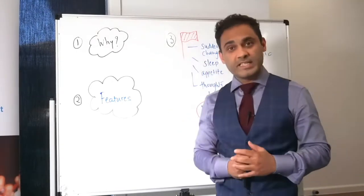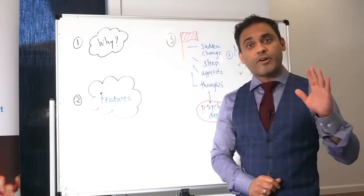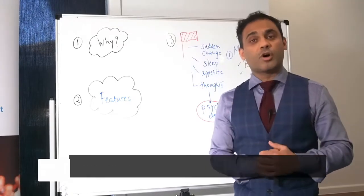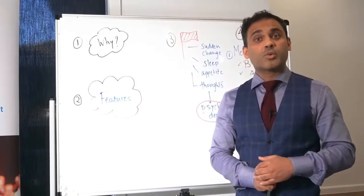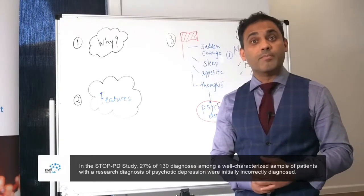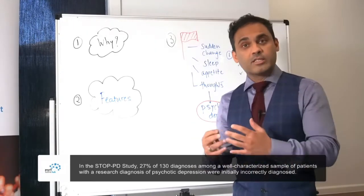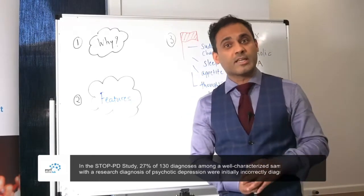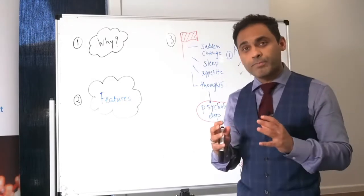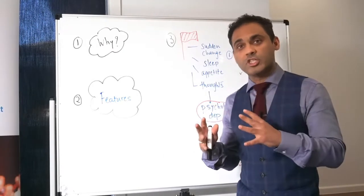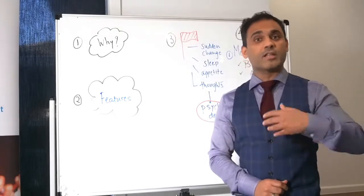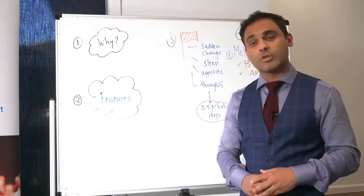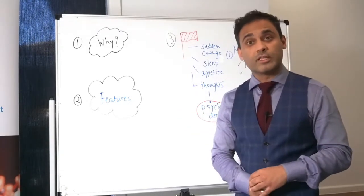So the STOP PD study actually showed that only 5% of individuals with psychotic depression receive adequate treatment of antidepressants and antipsychotic medications. 27.1% of individuals are misdiagnosed in psychotic depression, mainly due to missing the psychosis part of diagnosis. It happens because the thought processes in psychotic depression are not traditionally the same as one would find in schizophrenia. The bizarreness might not always be present and that's the reason it can be missed.